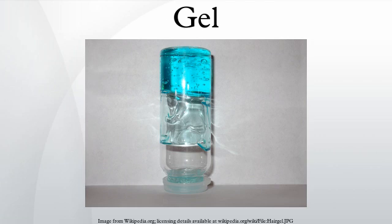A xerogel is a solid formed from a gel by drying with unhindered shrinkage. Xerogels usually retain high porosity and enormous surface area, along with very small pore size. When solvent removal occurs under supercritical conditions, the network does not shrink and a highly porous, low-density material known as an aerogel is produced. Heat treatment of a xerogel at elevated temperature produces viscous sintering and effectively transforms the porous gel into a dense glass.